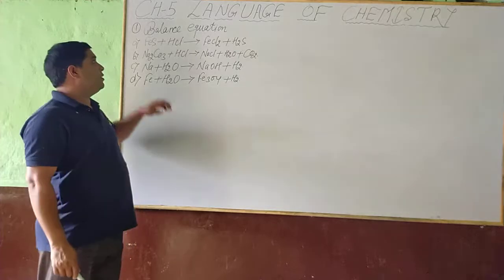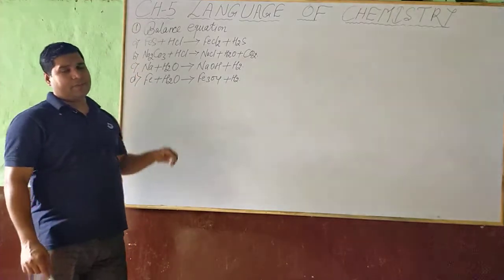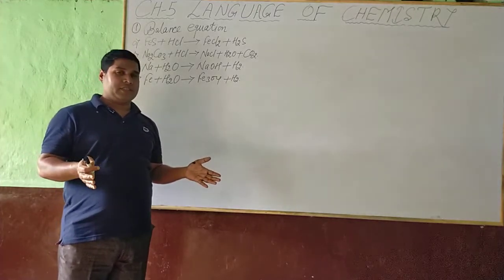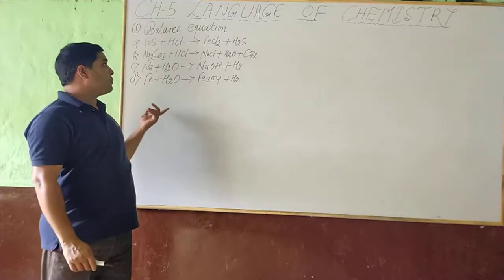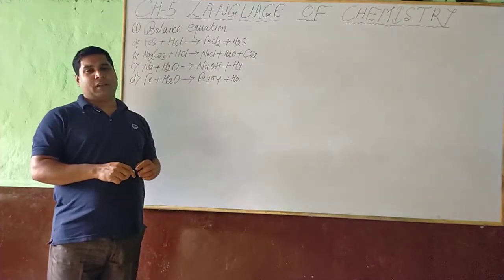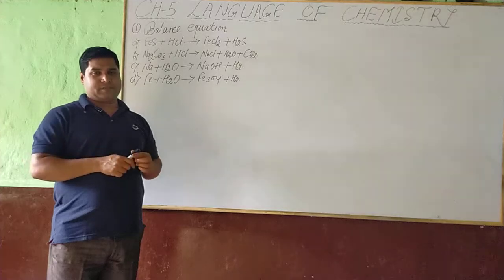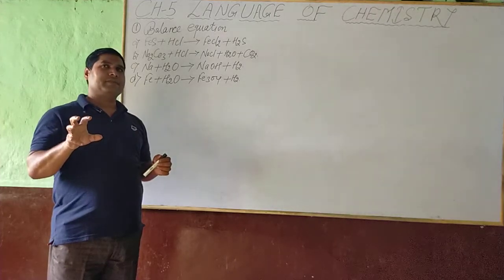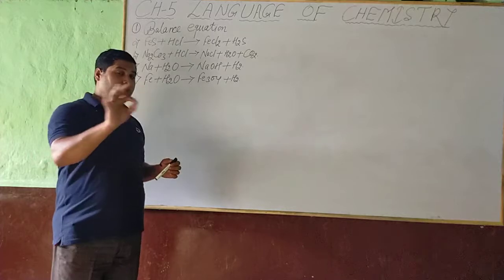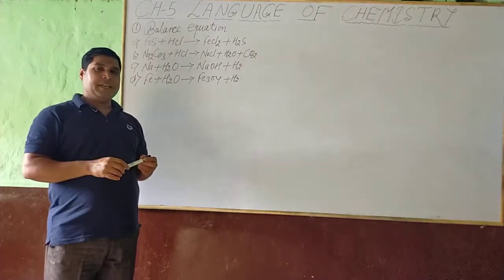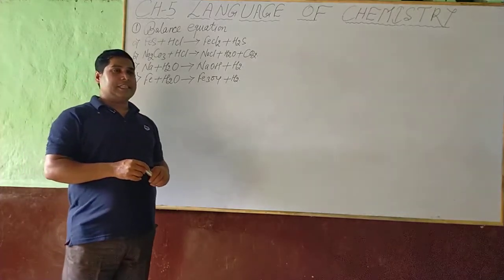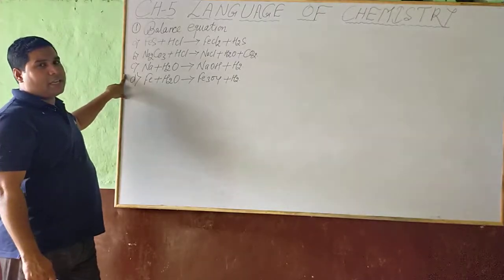I am going to continue Chapter 5: Language of Chemistry. In this video, I am going to explain how to balance a chemical equation. But first, you should know what a chemical equation is. A chemical equation is a symbolic representation of a chemical reaction using symbols and formulas of the reactants involved and the products formed in the reaction.